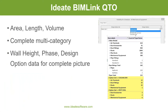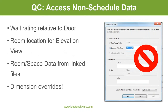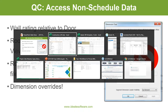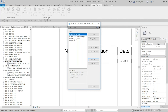That's a quick example of using ID8 BIM Link to extract large amounts of data. We have access to a lot of non-scheduled data as well — things like wall rating as related to the door, room and space data from linked files, dimension overrides, whether elements are in-place families, and more. There's a lot of additional data you can access beyond what's available in a standard Revit schedule.